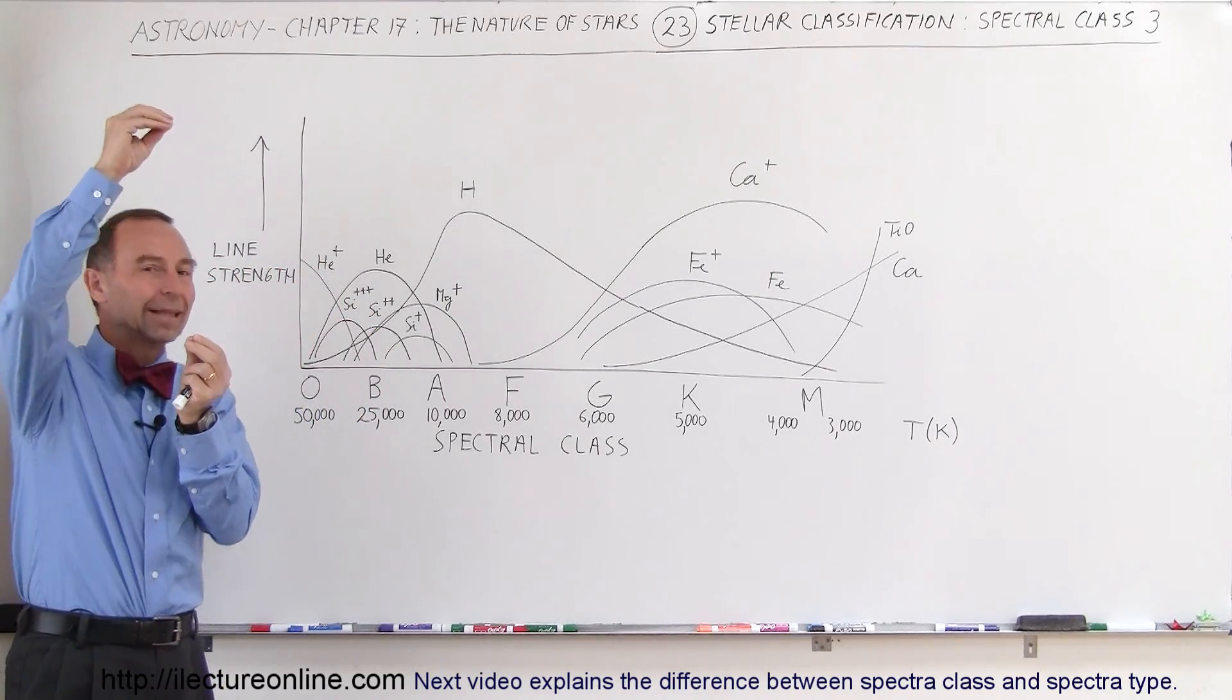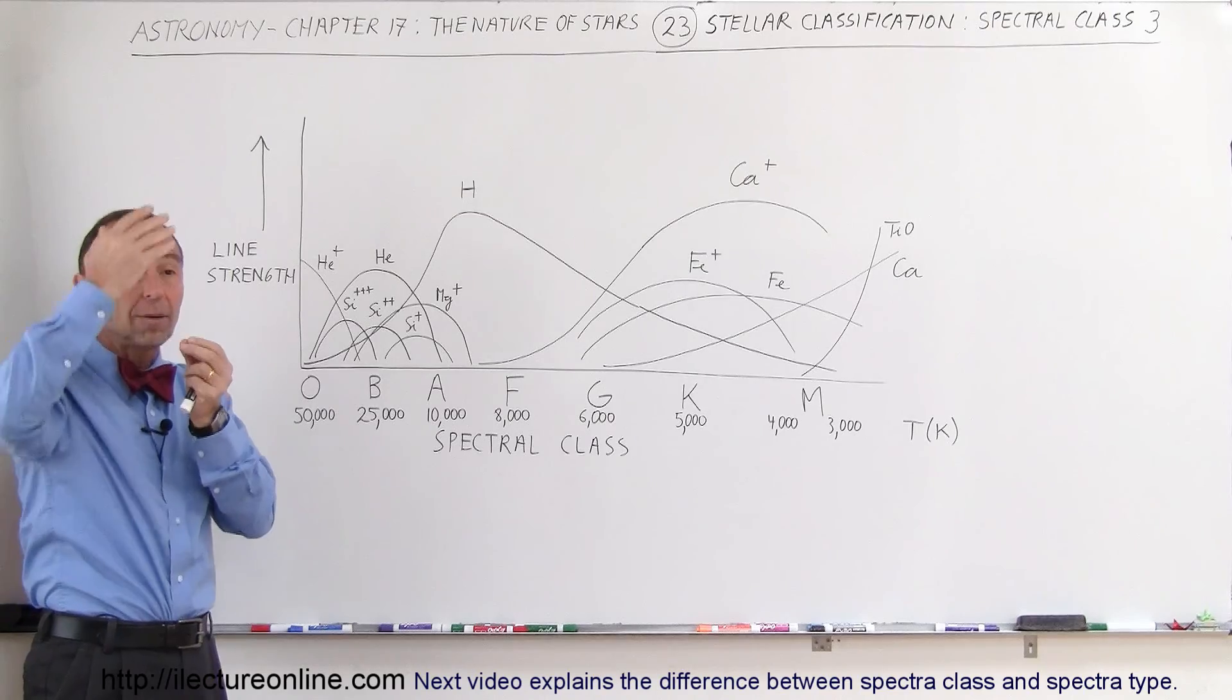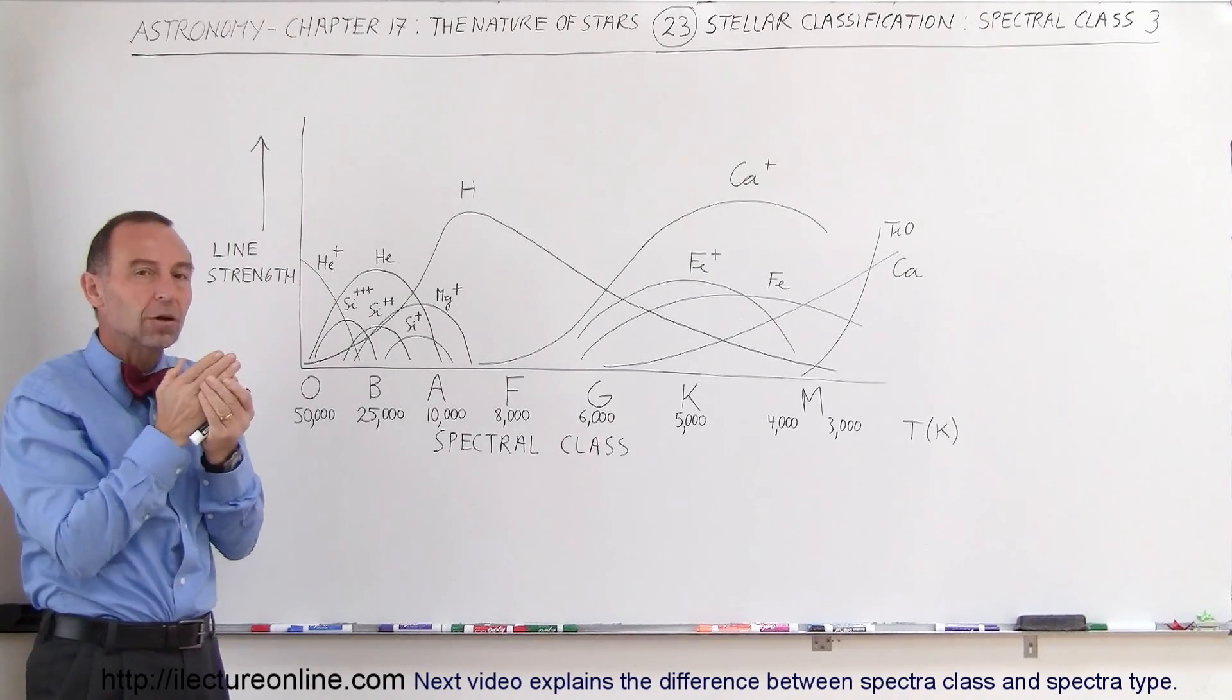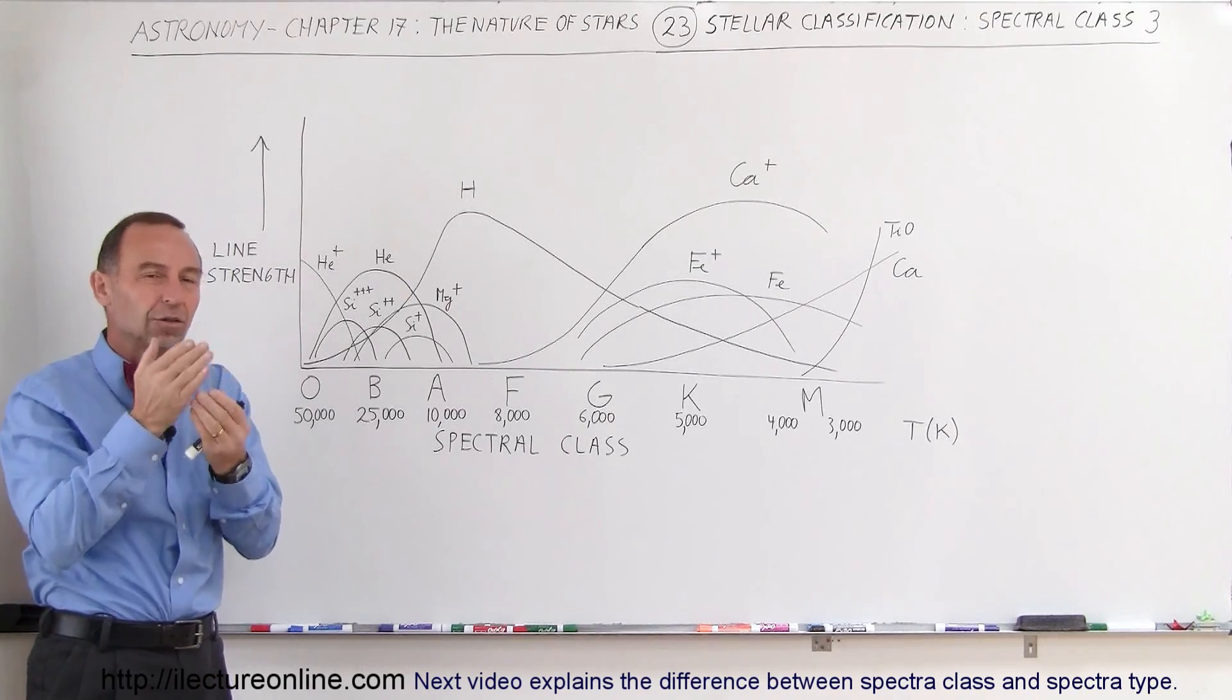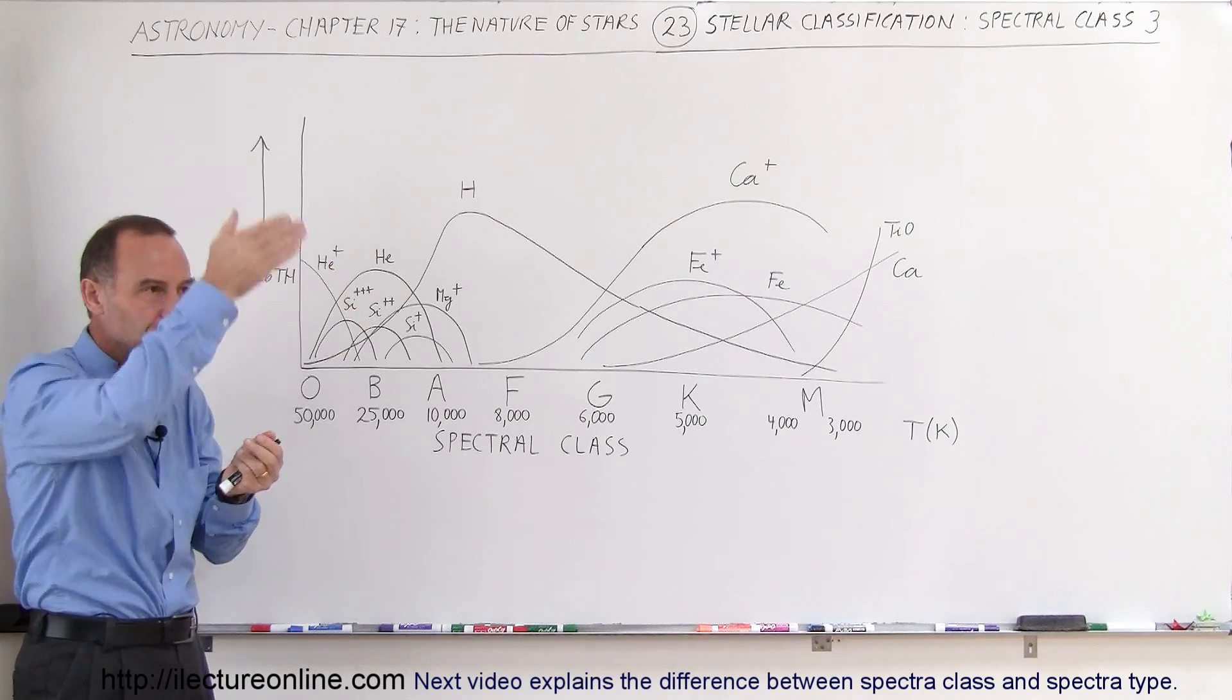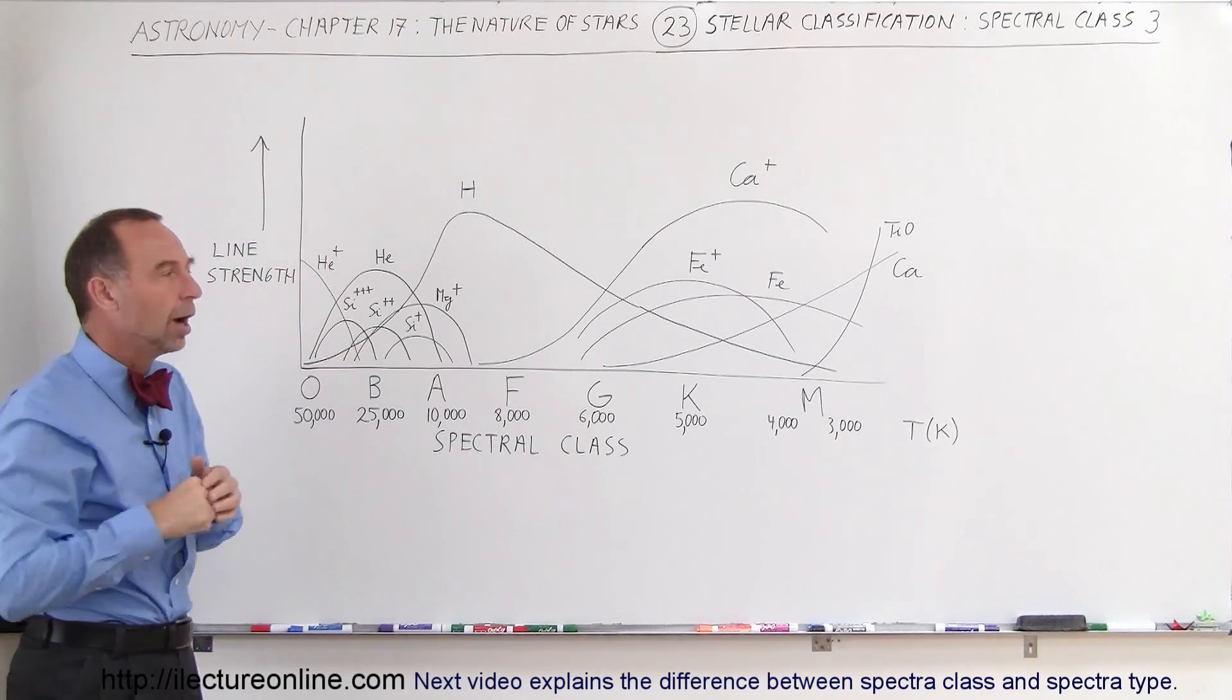The electrons jump up, then they jump back down. When they jump up, they absorb those photons. Those are then the missing colors, the missing lines that show up as very dark lines in the spectrum of the stars.